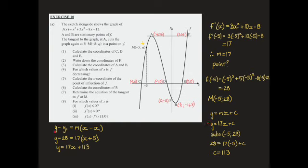The other way to do it is to use the point-gradient formula. To be honest, I keep forgetting about it — I like y equals mx plus c as my comfort zone. But the formula works quite quickly: I substitute the y-value of 28, the x-value of negative 5, and the gradient, then multiply out and rearrange to get the formula of the line.